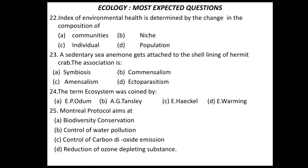Question 23: a sedentary sea animal gets attached to the shell lining of hermit crabs — the association is — four options are provided: symbiosis, commensalism, commensalism, and ectoparasitism. The correct option is B — commensalism.